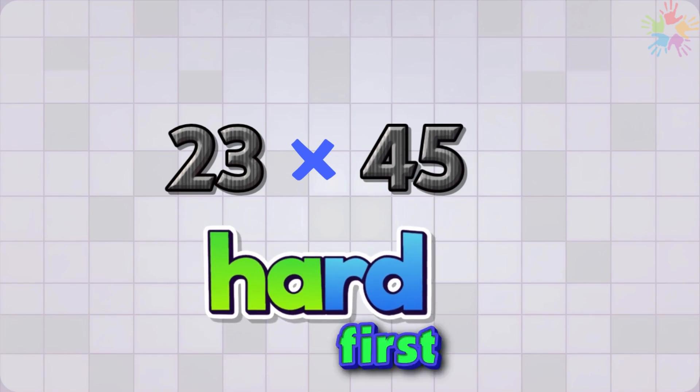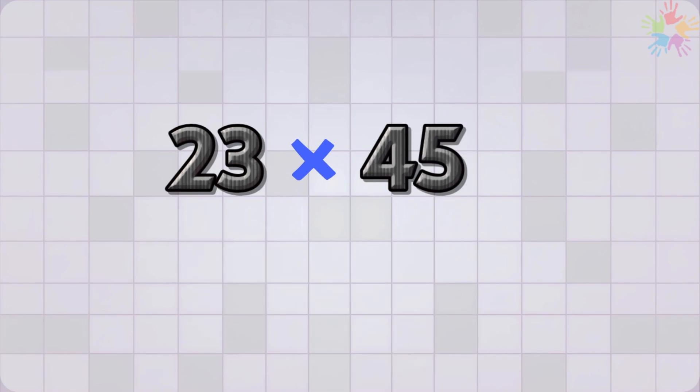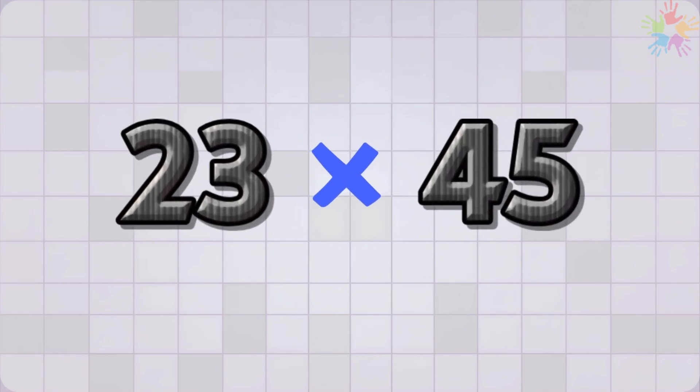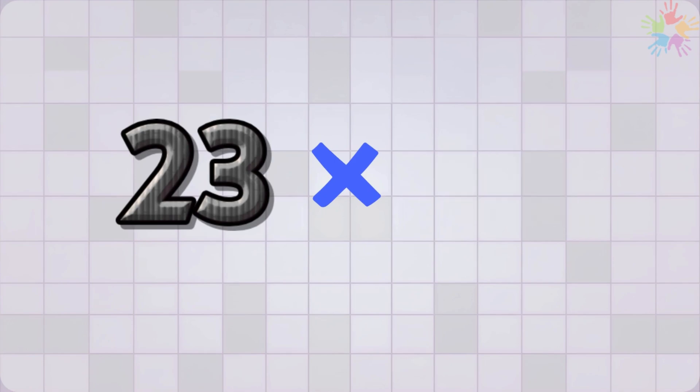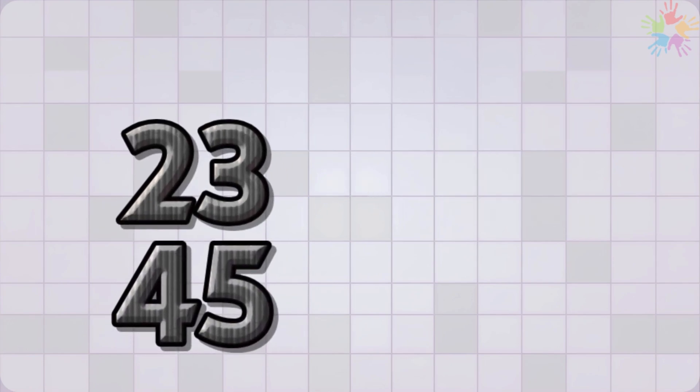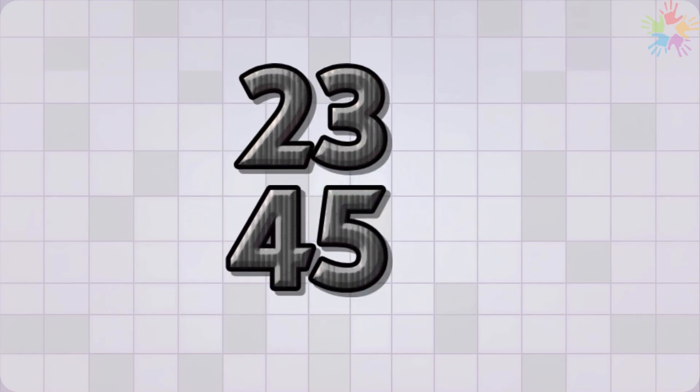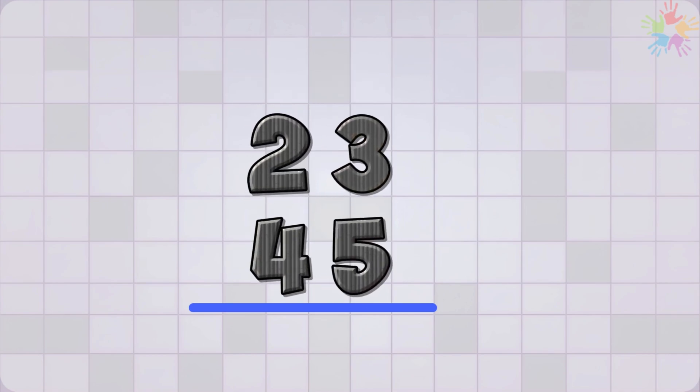It might seem hard at first, but actually if you know how to multiply regular numbers like 2 times 3, then this won't be hard at all. The key is to stack them, 23 on top and 45 on the bottom. You have to draw a line beneath it, that's where our answer will go. There is one thing I forgot to tell you, put a multiplication sign here so we won't forget that we're multiplying.